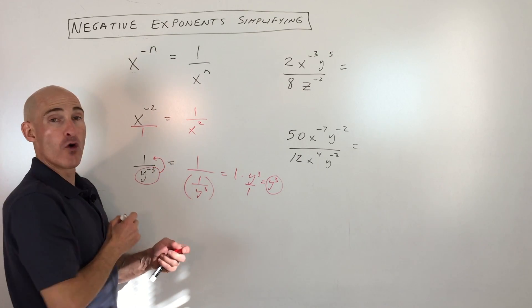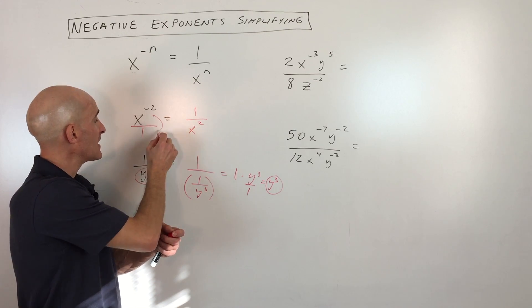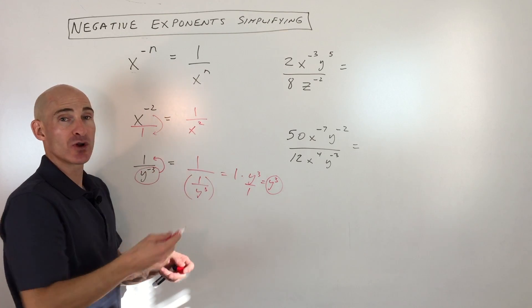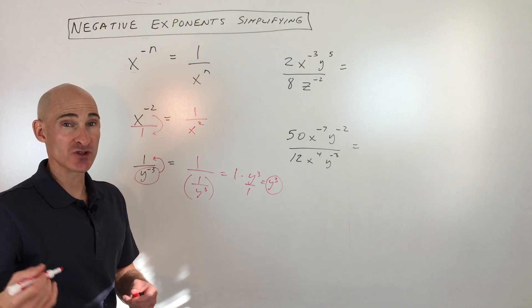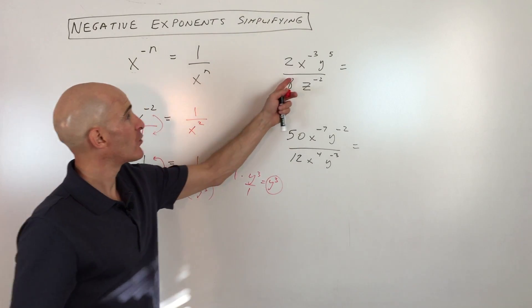Same thing with this one. You could think of x to the negative 2 as over 1. Anything divided by 1 is itself. So by moving this to the denominator and making it a positive exponent, you've taken care of that negative exponent. So you just want positive exponents in your final answer. Let's look at some more challenging examples.